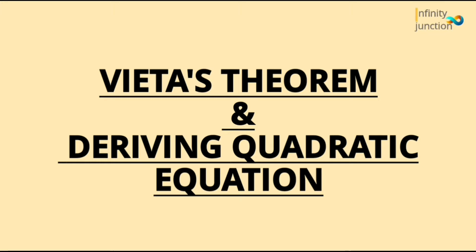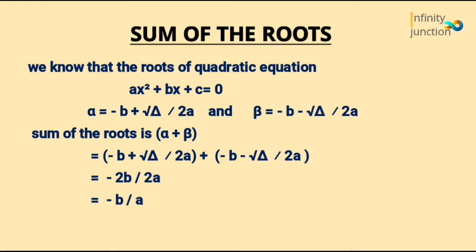Before moving towards Vieta's theorem and deriving the quadratic equation, let's first brush up the concept of sum of roots and product of roots which you studied in your previous classes. So let's say this is a quadratic equation Ax² plus Bx plus C equals to 0. It has two roots alpha and beta. If you find the sum of these two roots then you will get the value as minus B by A.